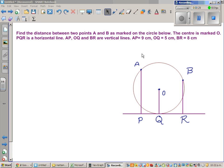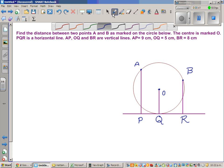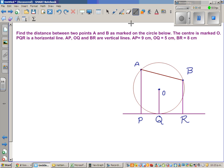AP is 9, the distance from A to P is 9. The distance from O to Q, or the radius, is 5, and BR is 8. So we want to use this information to find the distance from A to B. This is what the question is. Let us name that as x.